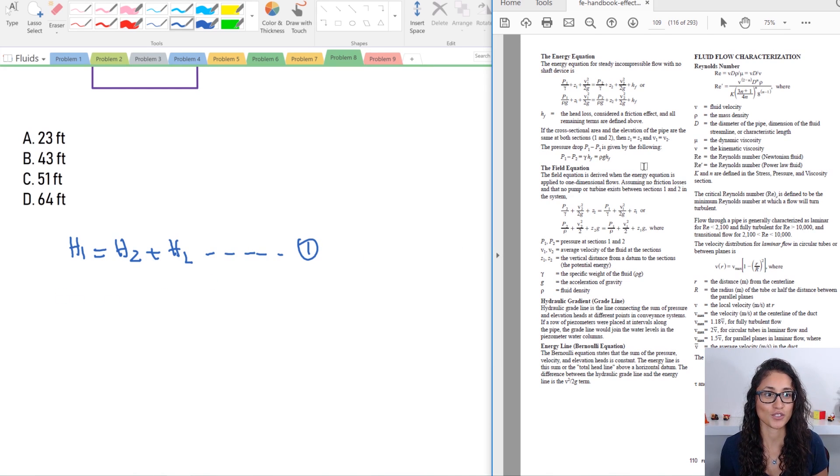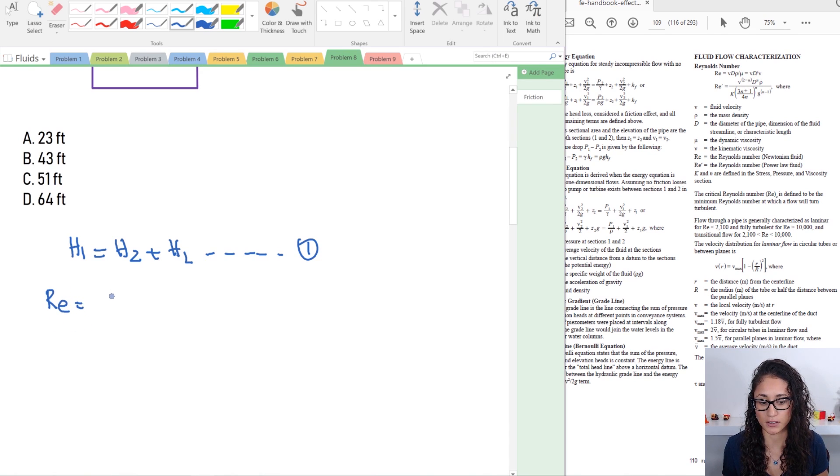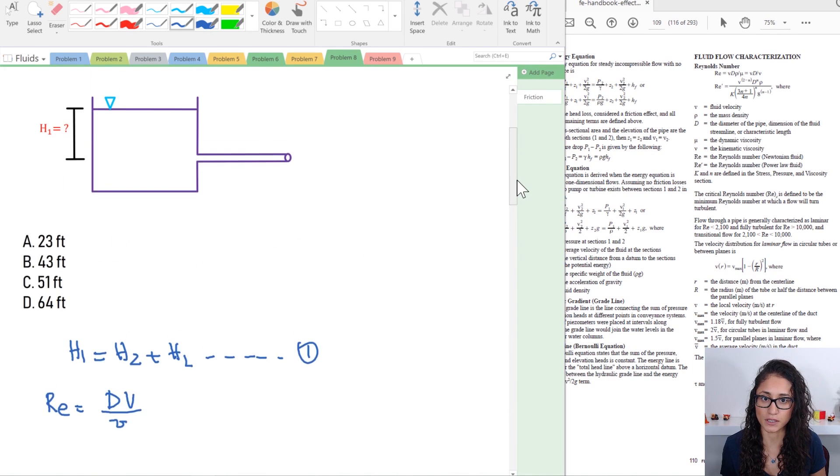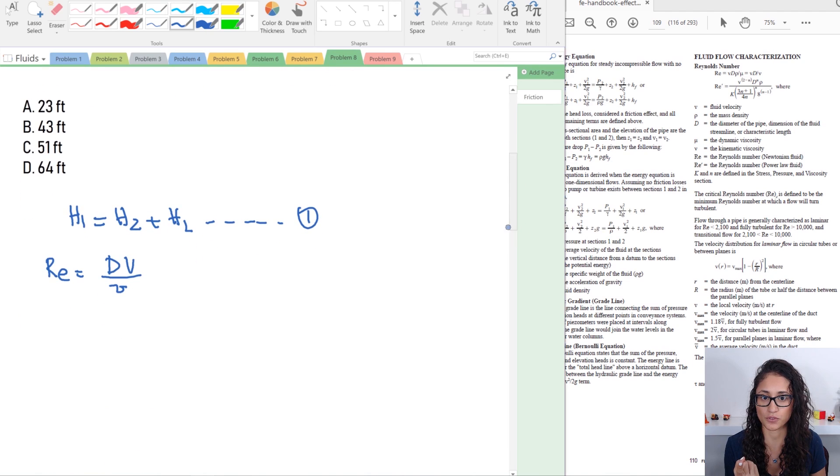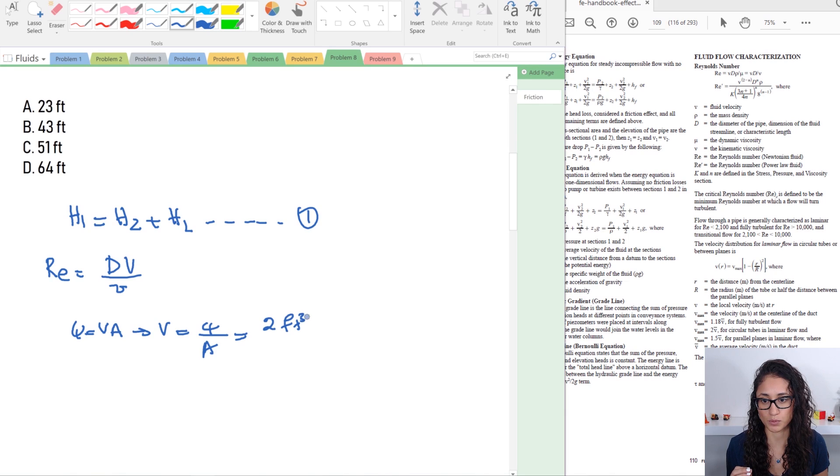Let's calculate the Reynolds number. Reynolds number is on page 109. Re equals diameter times V, which is velocity, divided by the dynamic viscosity. We don't have V but we have the flow rate so we can calculate V. Because it's steady incompressible flow, we have Q equals VA. So V equals Q over A. Q is 2 cubic feet per second. The area is pi over 4 times D. D is 4 inches divided by 12 to convert to feet. So we have pi over 4 D squared. If you plug this in, you'll get 22.92 feet per second.